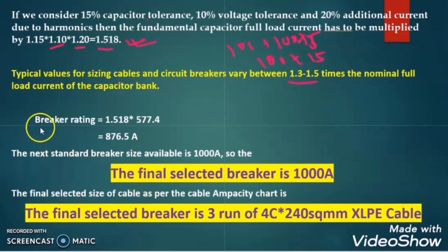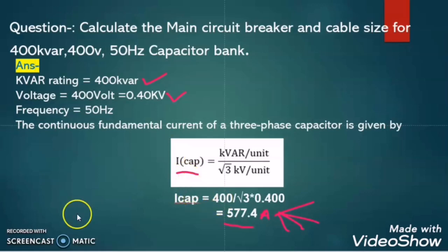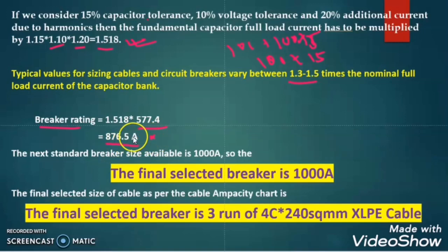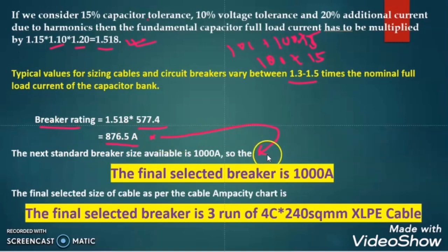So the final breaker rating will be the factor 1.518 multiplied by the capacitor current of 577.4 A, which gives 876.5 A. Since we cannot get this exact ampere rating, we go for the next standard breaker rating, that is a 1000A breaker.